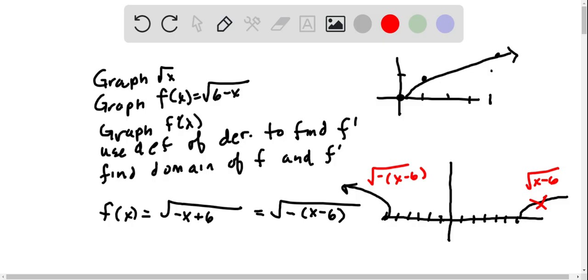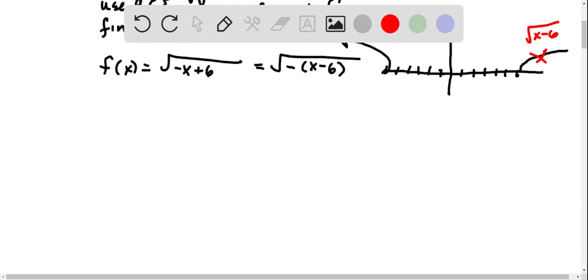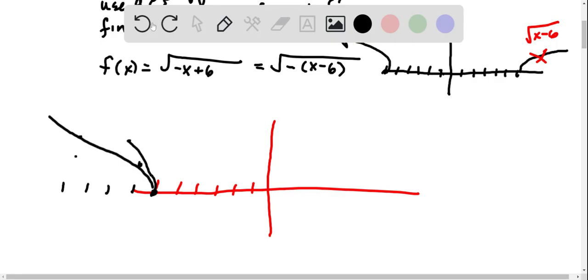Okay, now graph f prime of x. I'm going to draw me another picture of it. One two three four five six. Goes through, over one up, going on, over four.